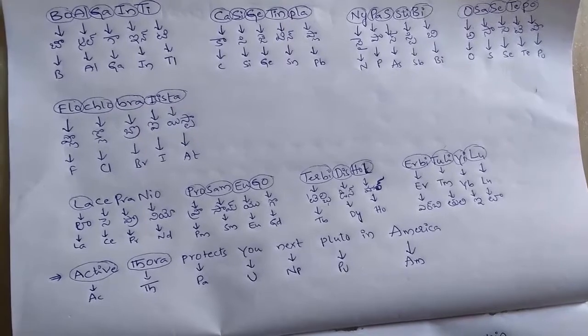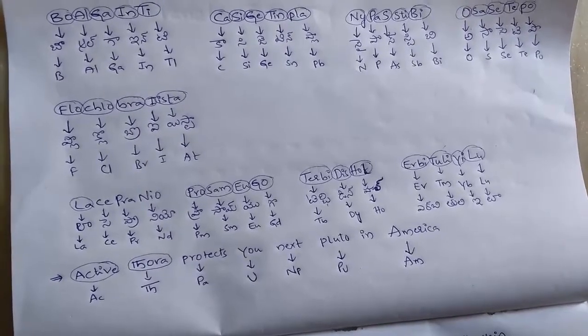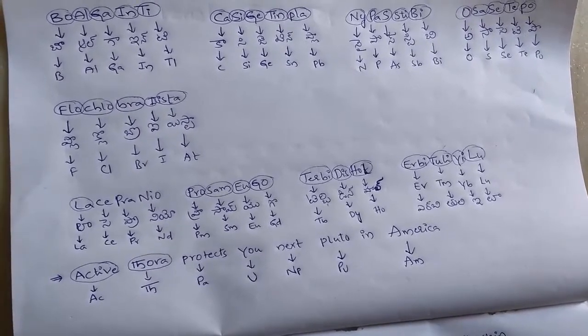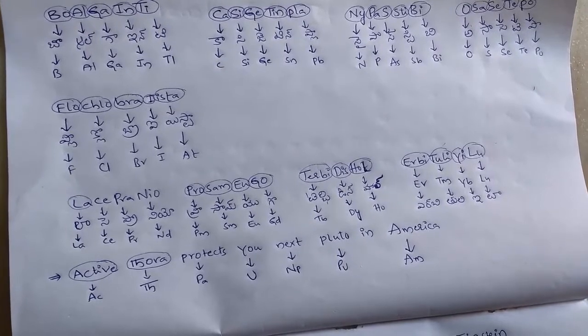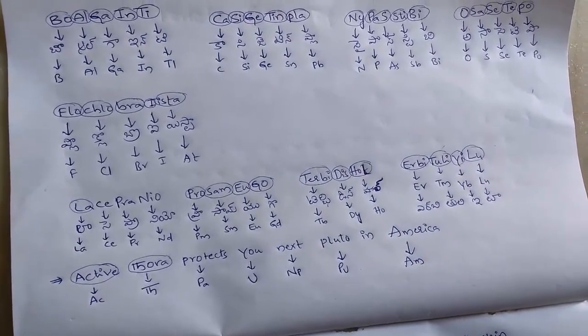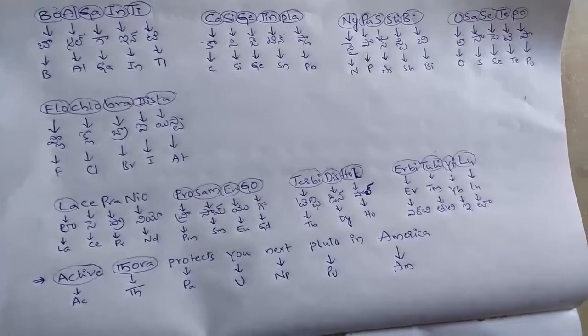Nipostebi. Nipostebi. N means nitrogen, P means phosphorus, As means arsenic, Sti means antimony, Bi means bismuth.